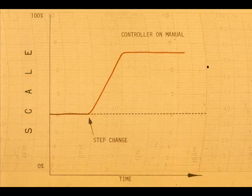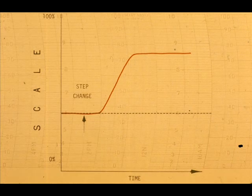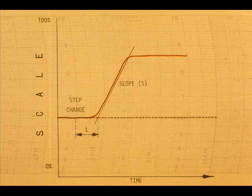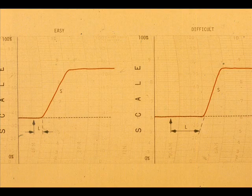The process may make an immediate response after the step change, or the response may be delayed by lags and dead time in the process. The time L it takes the curve to reach the most rapid rate of change, multiplied by the slope S, determines the controllability of the process. The higher the product of S times L, the more difficult the process is to control.